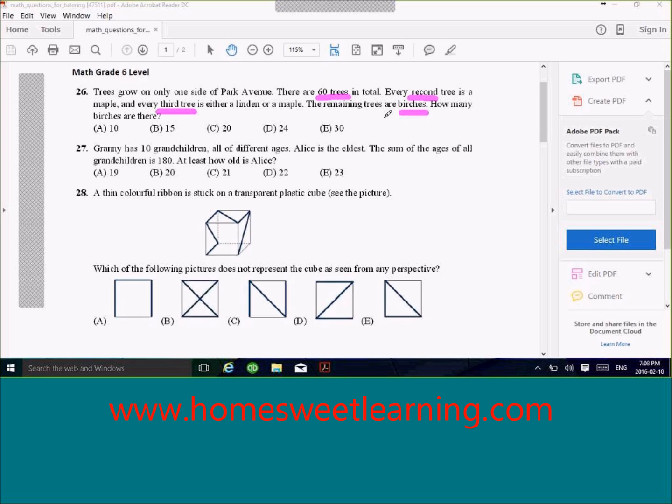So that means every first tree will be birches. So then you group the trees. You go one, for example, the first tree is birches, and then the second tree, as mentioned, will be maple.